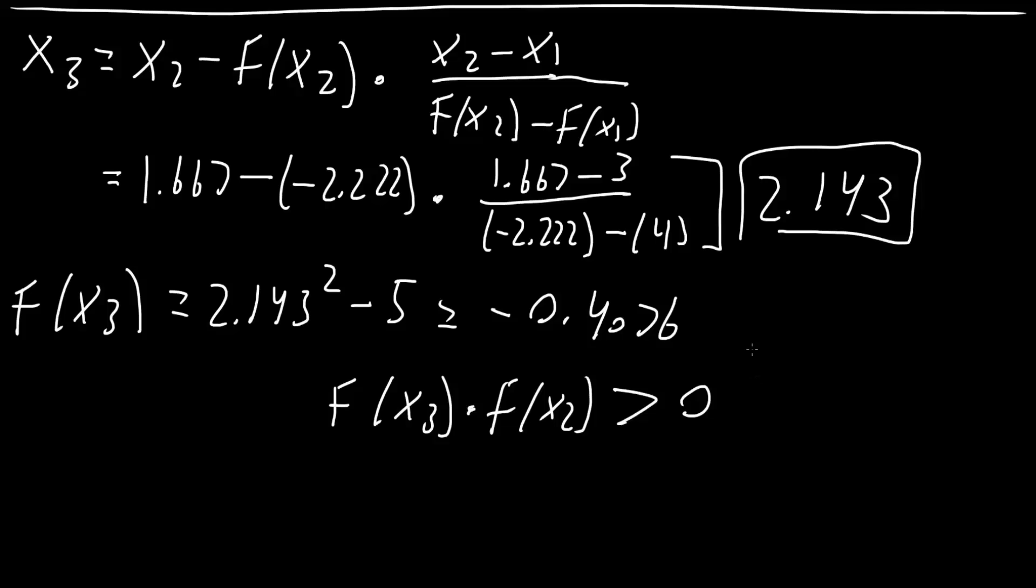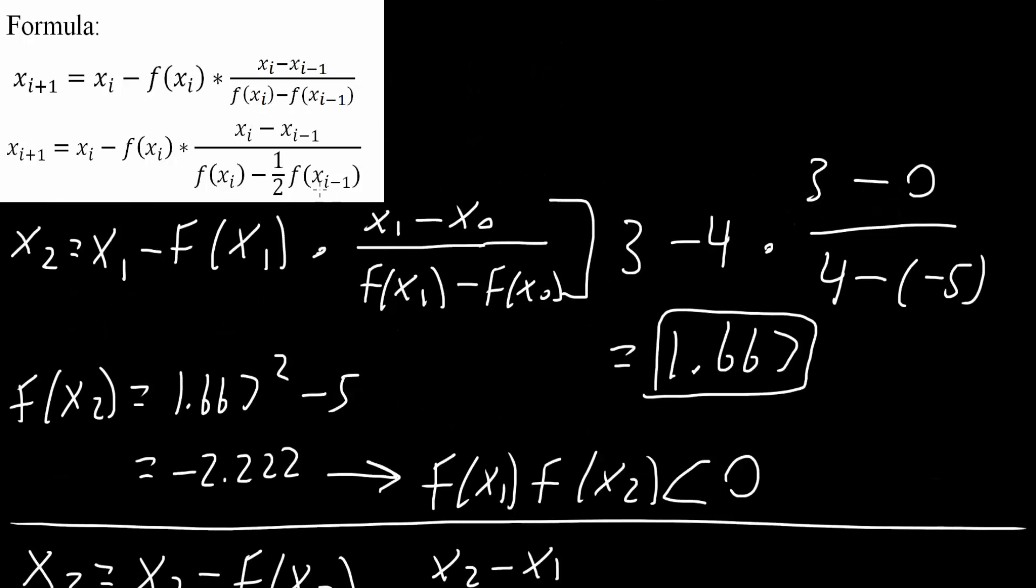And so now we use the second equation, which is the Illinois approximation, for the third iteration. So let's do that. And just to recap, if this is greater than 0, we use this equation here. Almost the same thing, except we have a one-half here. This is one equation, this is the second equation. Second equation, one more step, it's just a one-half here.